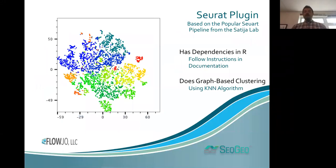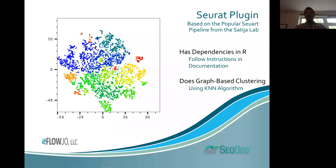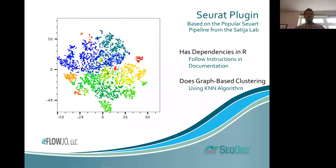Another method of unbiased clustering is the Seurat plugin — a huge shout out to the Satija Lab at NYU who developed this pipeline in R. It's free and available at exchange.flojo.com. Seurat implements quality control, dimensionality reduction, unbiased clustering based on a k-nearest neighbors algorithm, and differential expression on those clusters — all in essentially one package. Sometimes it's nice to subset a population of interest and do finer clustering on it, which I'll talk about at the end of this slide deck.